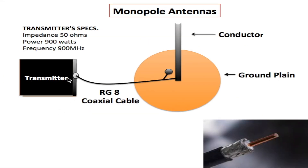I went ahead and connected my RG8 coaxial cable from the transmitter to the monopole antenna. You'll notice I have one connection going to the ground plane and the other going to the monopole antenna. The middle conductor of the coaxial cable goes to the monopole antenna and the other conductor goes to the ground plane. I've heard from some viewers who reversed this and said it worked, but even though it may work, you will not be getting maximum power transferred to your antenna. With 900 watts being sent, reversing the connections may still work but will not be as efficient, and some power would be reflected back. So it is very important to connect the middle conductor to the antenna and the outer conductor to the ground plane.